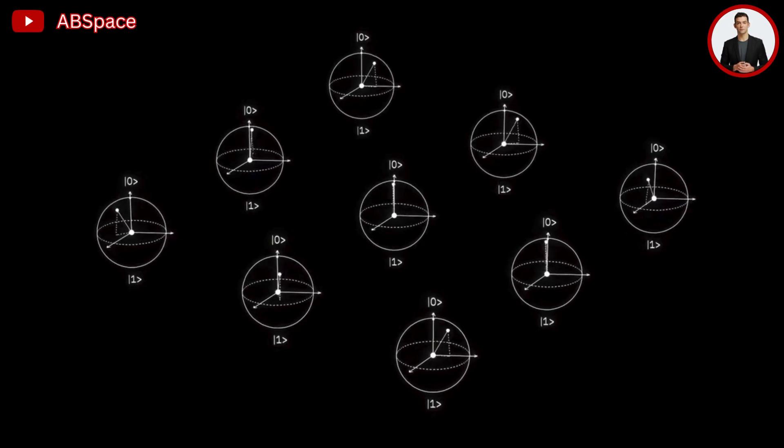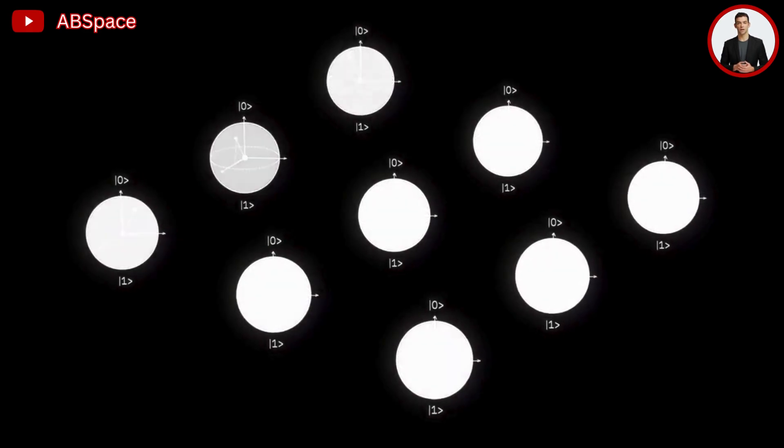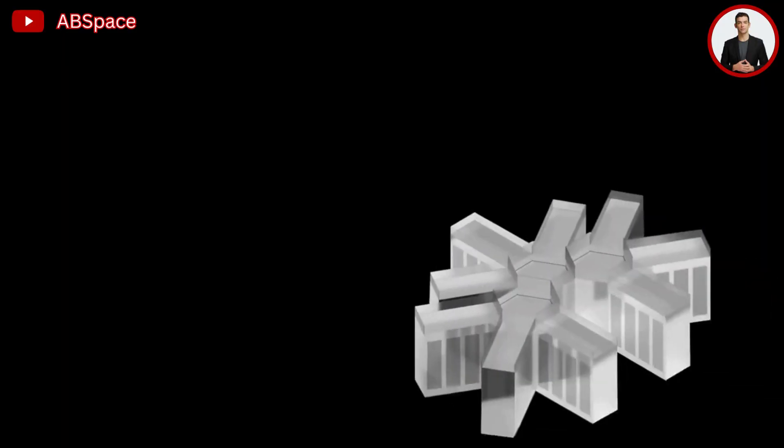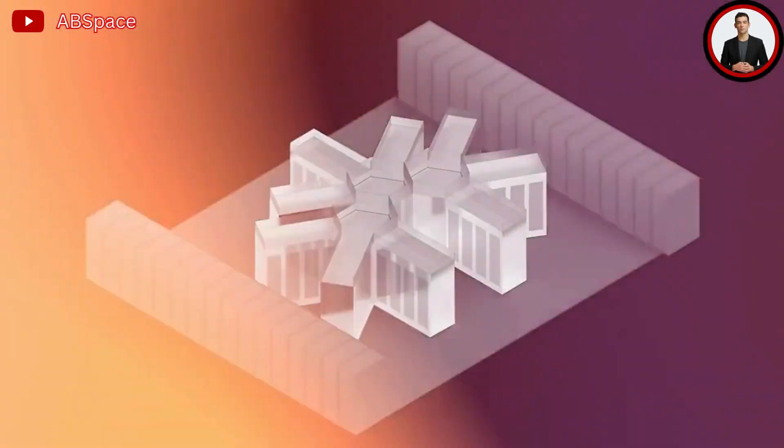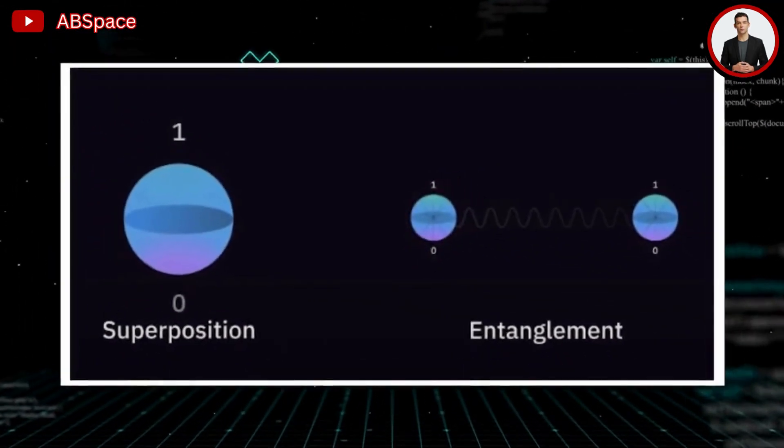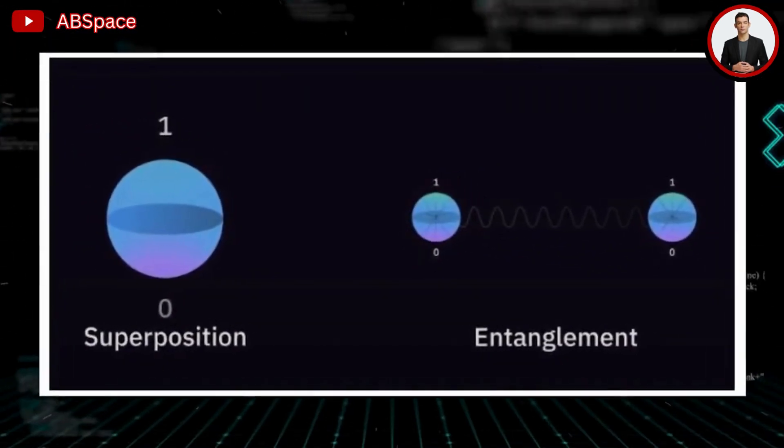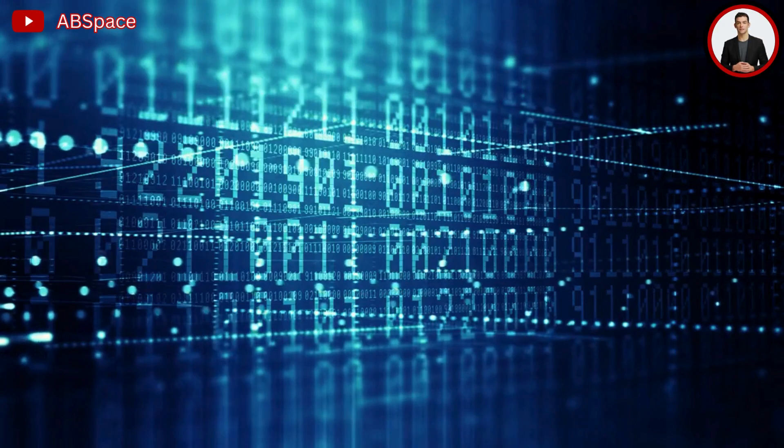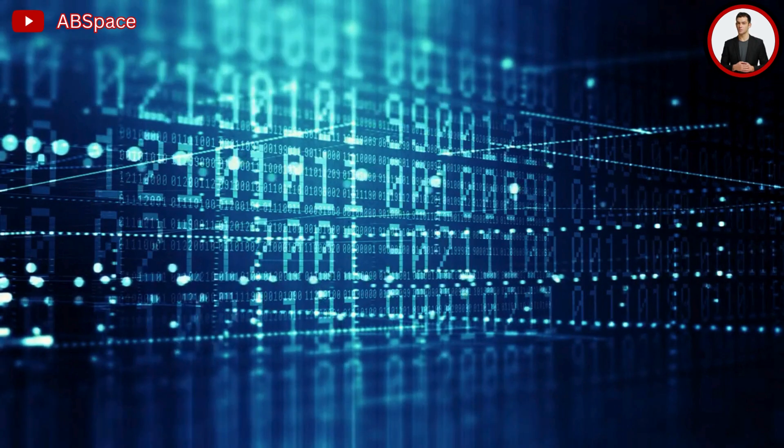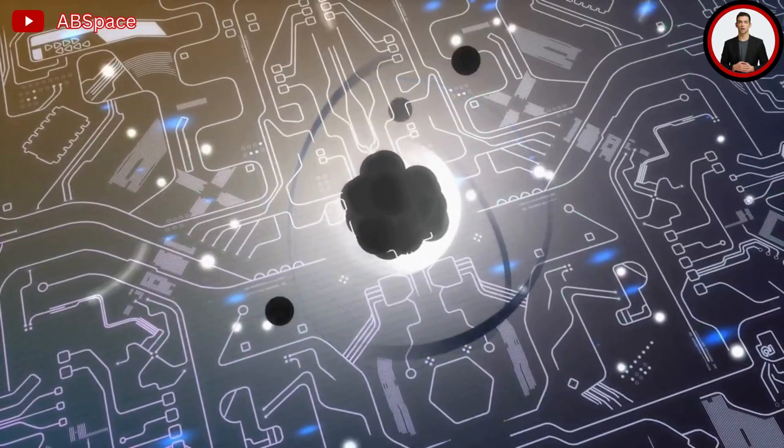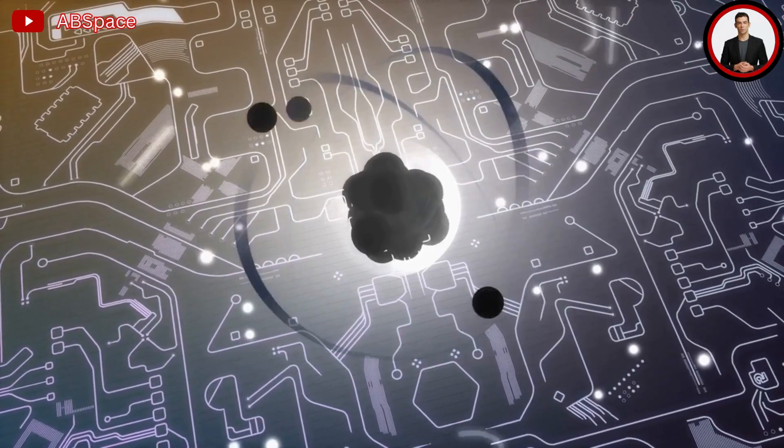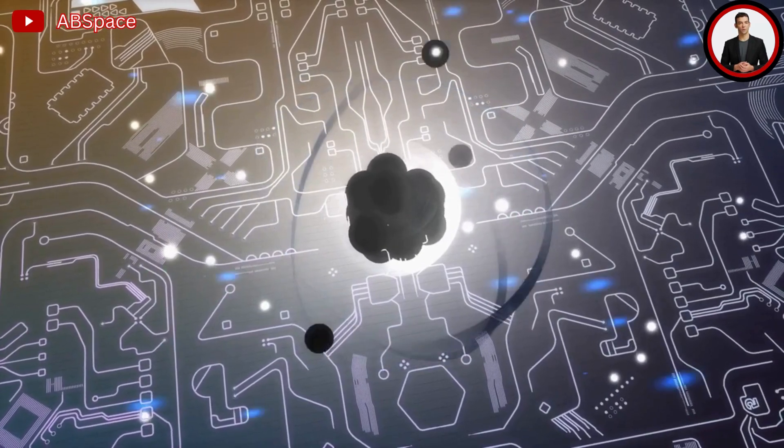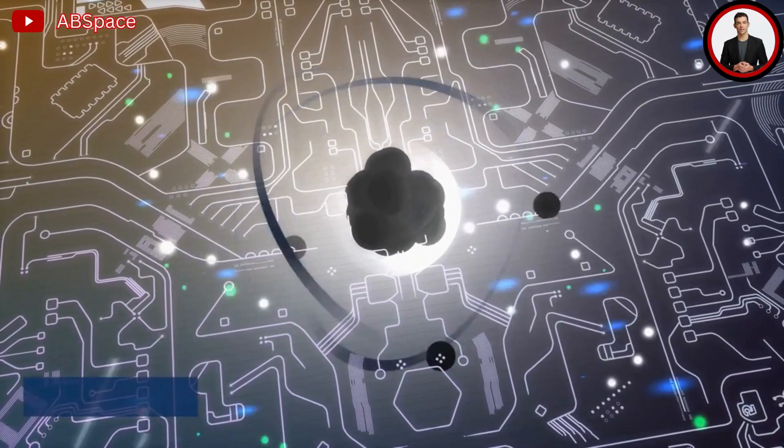They are going to accomplish this by taking advantage of quantum phenomena peculiar to quantum mechanics, such as entanglement and superposition, which enable numerous qubits to exist simultaneously in multiple collective states. The quantum states in question, on the other hand, are notoriously erratic and prone to errors. In an effort to circumvent this issue, physicists have attempted to coax several physical qubits, each encoded in a superconducting circuit or an individual ion, to collaborate in order to represent a single logical qubit.